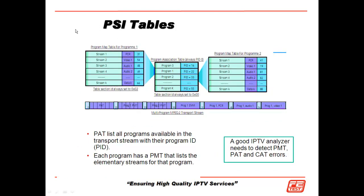We also have, in our transport stream, the PSI tables — the PAT tables and CAT tables. I like to refer to these as the TV guide for your set-top box. These tables define where the program clock reference is, where the video and audio is, and the PID — for example, here's the audio and video for ESPN. So a good IPTV analyzer needs to detect if there are any errors to any of these tables, known as PAT, CAT, or PMT tables.